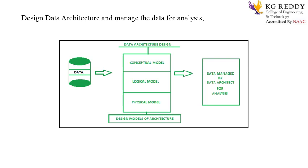Coming to the performance of the architecture: the architecture will integrate the data. Depending upon the data architecture standard, data integration requires data interaction between two or more data systems. It also describes the data structure used by the business and its computer application software. The next point is it addresses the data in storage and data in motion — so when data is transferred from one database to another, the data architecture will address that data. It also describes how data is processed, stored, and utilized.